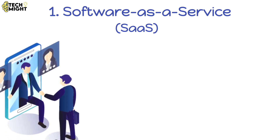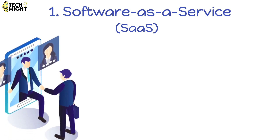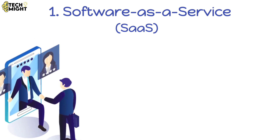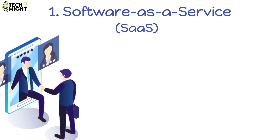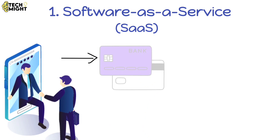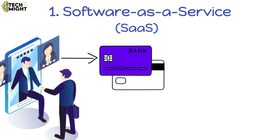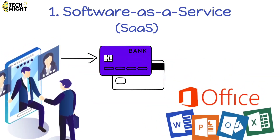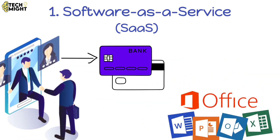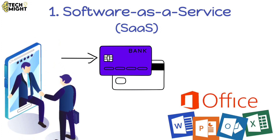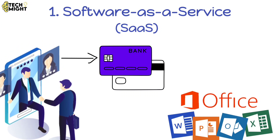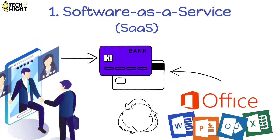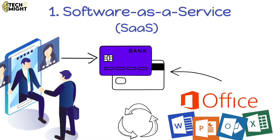SaaS is all about licensing software applications to customers. Think of it like subscribing to a service rather than purchasing a software package. A classic example is Microsoft Office 365. You access the software online, pay as you go, and updates are a breeze.